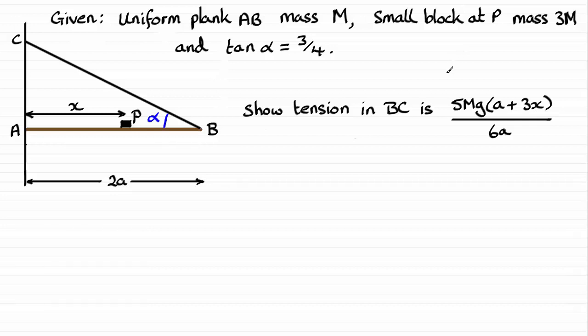What we've got here is a plank AB of mass M and its length is 2a, and it rests with one end here at A against a rough vertical wall. The plank is held in a horizontal position by a rope. One end of the rope is attached to the plank at B and the other end is attached to a rough wall at C, which is vertically above A. We have a small block of mass 3M at this point here P, where AP is equal to x.